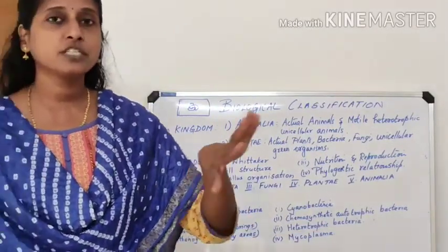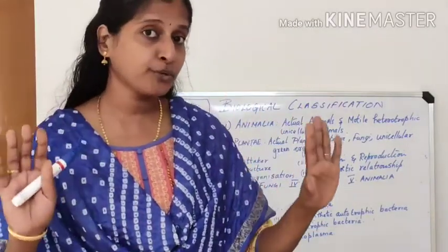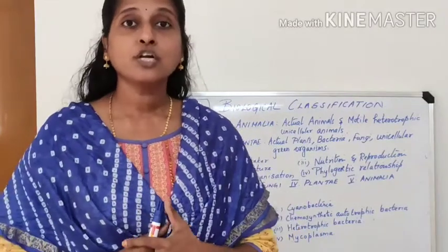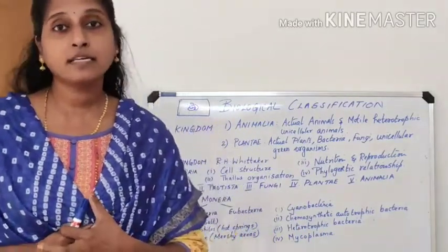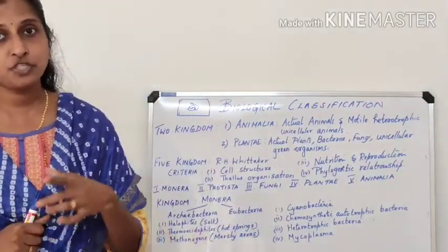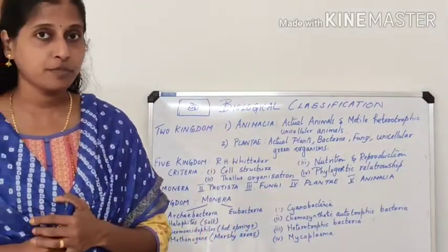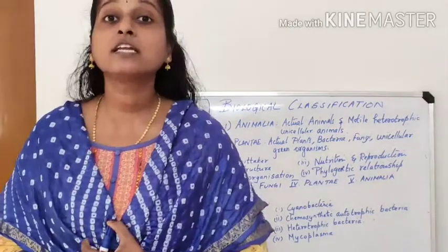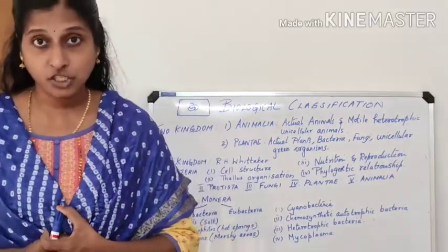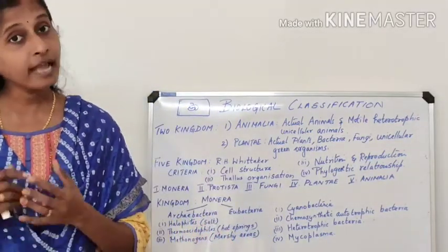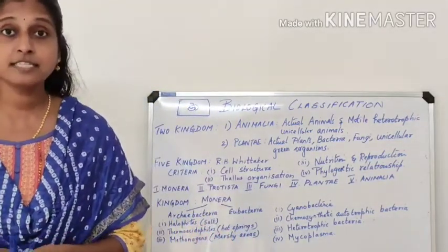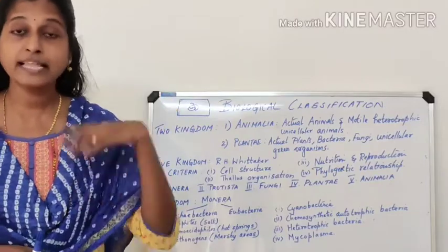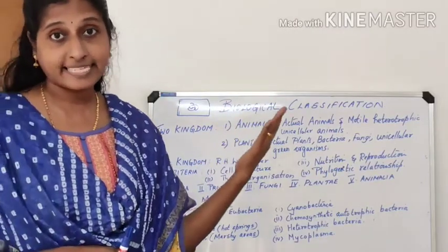In order to avoid that confusion, three-kingdom and later five-kingdom classifications were proposed. We are going directly to the five-kingdom classification, which is in your syllabus. As the name suggests, there are five kingdoms, and this classification is widely accepted.